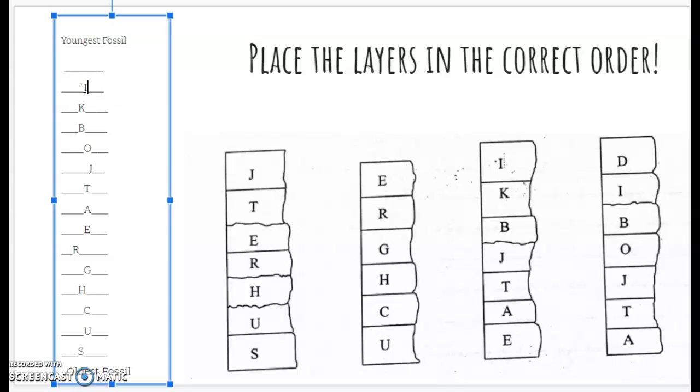So I've got to find another letter I somewhere else, and here it is in column four, my second letter I. These are the same layer. And above that letter I is letter D. So now I have my answer.